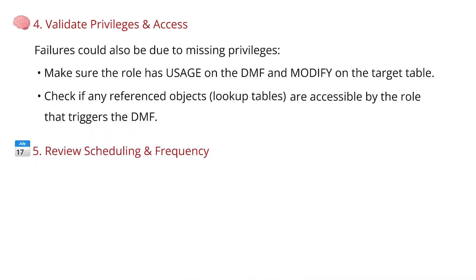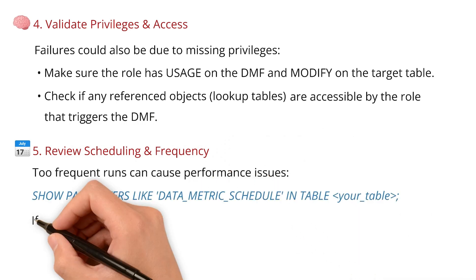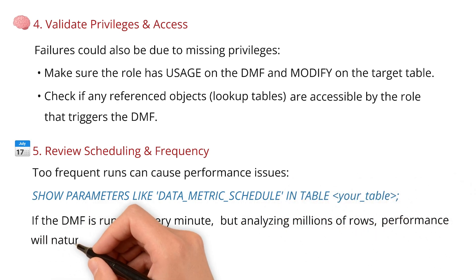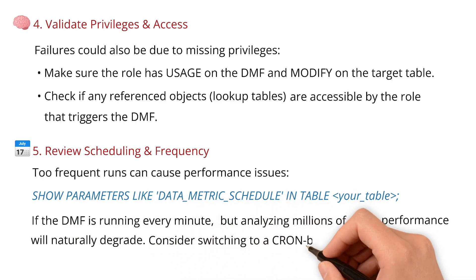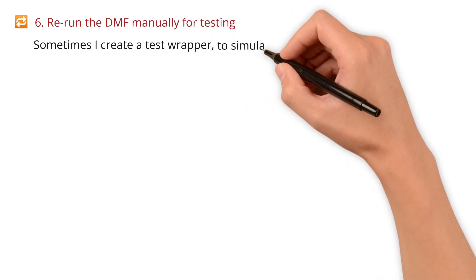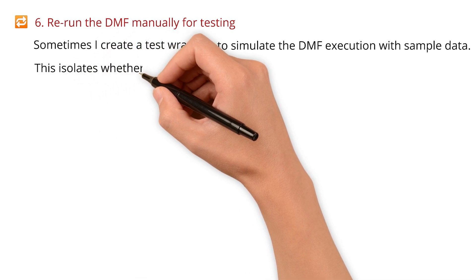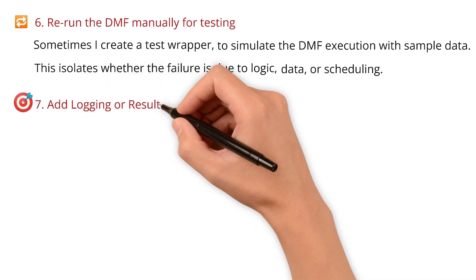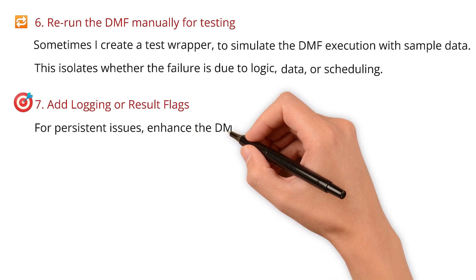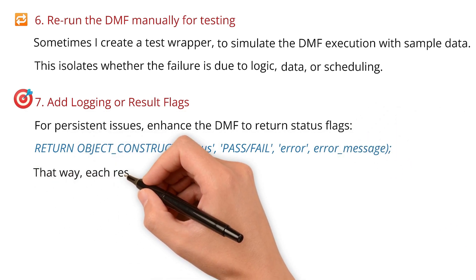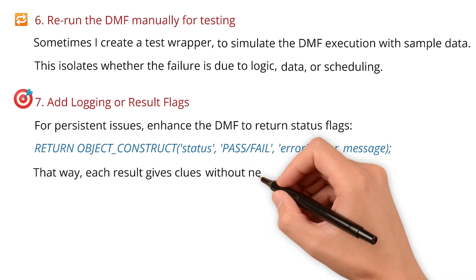I also review scheduling and frequency — too-frequent runs can cause performance issues. If the DMF is running every minute but analyzing millions of rows, performance will naturally degrade. In that case, consider switching to a cron-based or change-triggered schedule. I also rerun the DMF manually for testing, sometimes creating a test wrapper to simulate execution with sample data. This isolates whether the failure is due to logic, data, or scheduling. For persistent issues, you can enhance the DMF to return status flags like pass, fail, or error with a message, so each result gives clues without needing deep log dives every time.